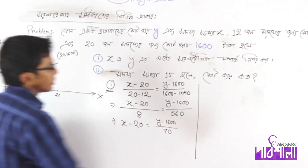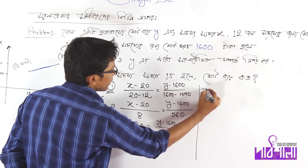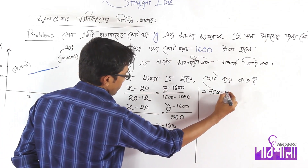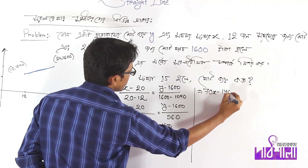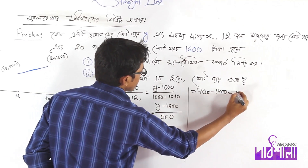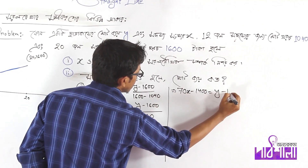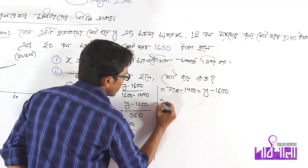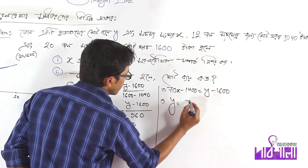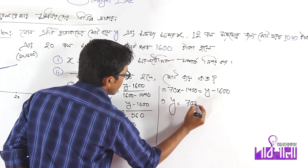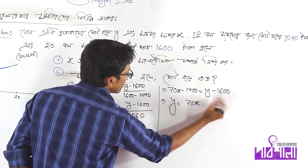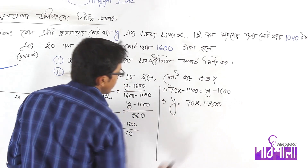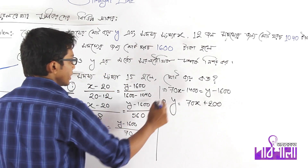Now we have to do this. I have to cut out the same thing. 70x minus 0 equals to y minus 0. So y minus 0. 70x plus 2 minus 0. We have to cut out the same thing.